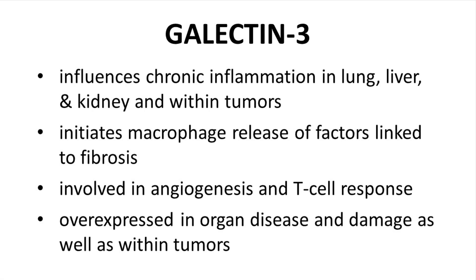Galactin-3 plays a key role in chronic inflammation in major organs such as the lung, liver, and kidneys, as well as within tumors. Galactin-3 triggers the release of different factors and signal molecules that affect fibrotic responses. Galactin-3 can also influence angiogenesis and T-cell response. Galactin-3 is broadly expressed throughout the body, but it is overexpressed at sites of tissue damage and within tumors.